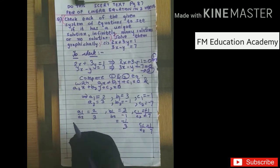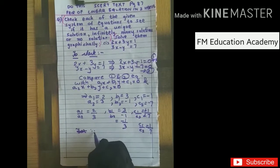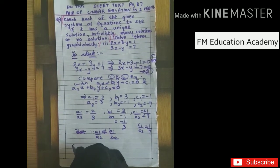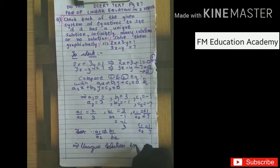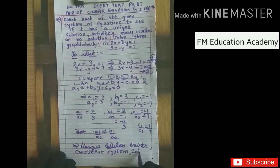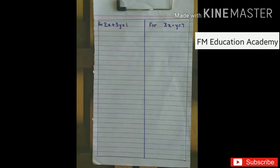Since all three ratios are unequal, we know that when a1 by a2 is not equal to b1 by b2 — that is, 2 by 3 is not equal to minus 1 by 3 — a unique solution exists. For a unique solution, we have a consistent system and the lines are intersecting lines. This completes the first part of the question where we used the ratio conditions to determine the type of solution. Now we will solve the equations graphically.